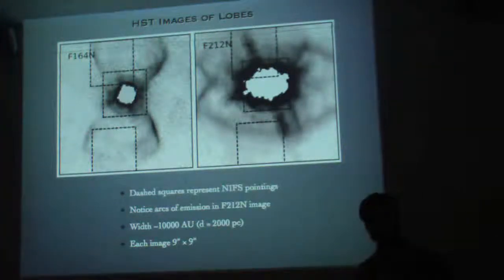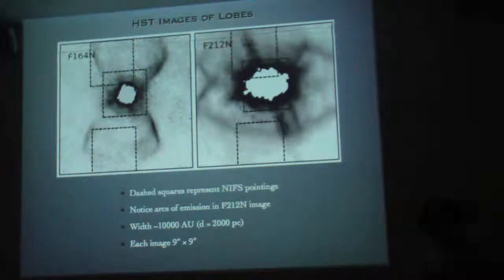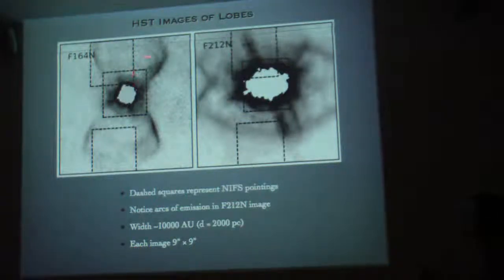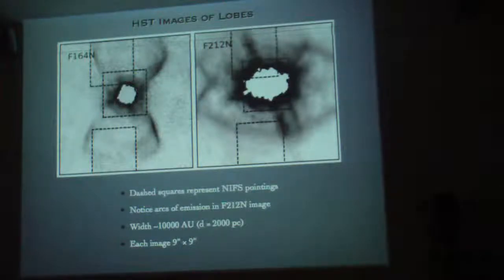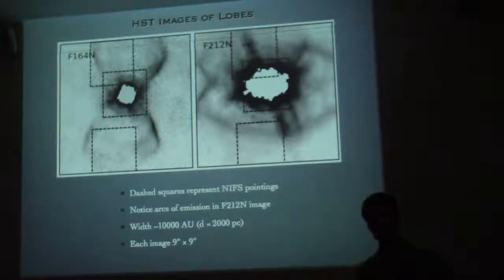Here I'm showing some HST images. I've taken out the center here of the nebula just to bring it out. Because it's just so bright, it saturates. Just to really emphasize the lobes. So you can see the lobes here. The dashed lines, those are the positions for our pointings we took with NIFS.